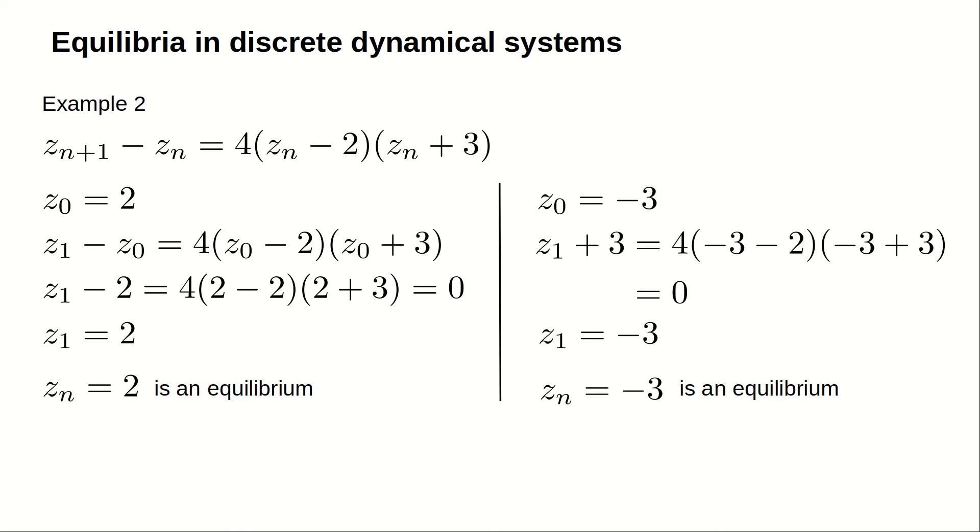If you try any other initial condition z sub 0, you will find that z sub 1 will be a different number. For example, if z sub 0 equals 0, then z sub 1 equals negative 24. 0 is definitely not an equilibrium.